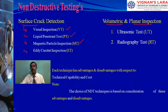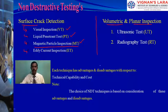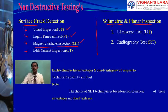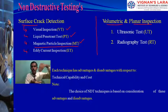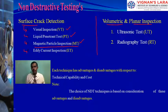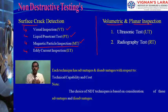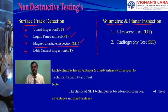Our interest of study is on the third one — magnetic particle testing. For volumetric defects, ultrasonic and radiographic testing can inspect through the thickness. For surface defects, the remaining four methods are applicable. Each technique has its own advantages and disadvantages with respect to technical capability and cost.